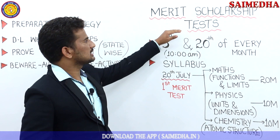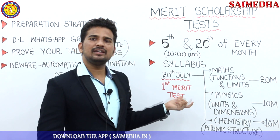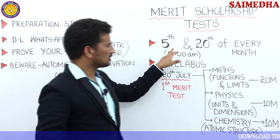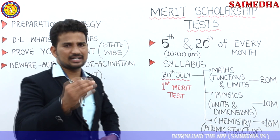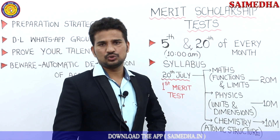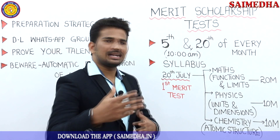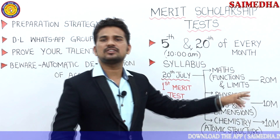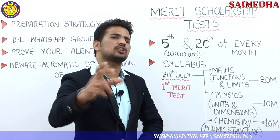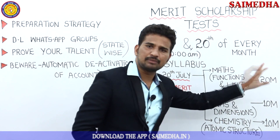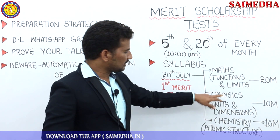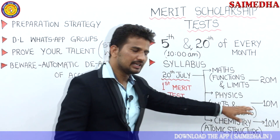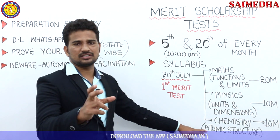We will conduct this quality test every month two times. Every month on these dates, we conduct the exam at 10 a.m. On July 20th, we conduct this merit test. We have a topic of physics and chemistry. We have a topic of functions in maths. We have 20 marks total — 10 marks in physics and a topic of chemistry and atomic structure.